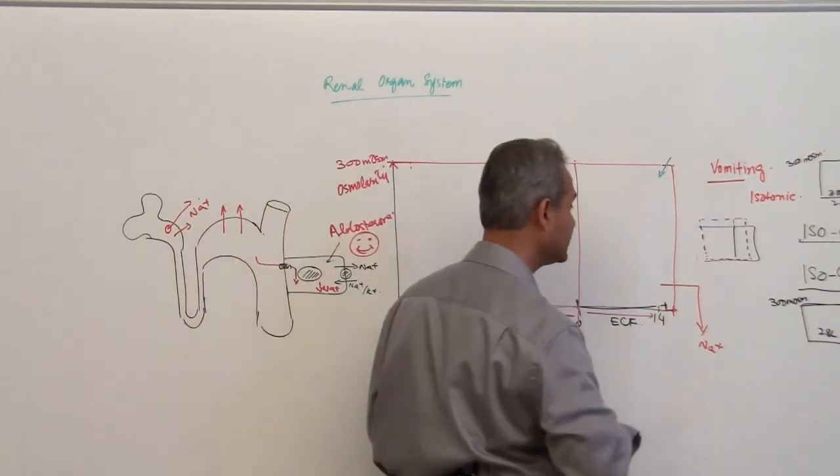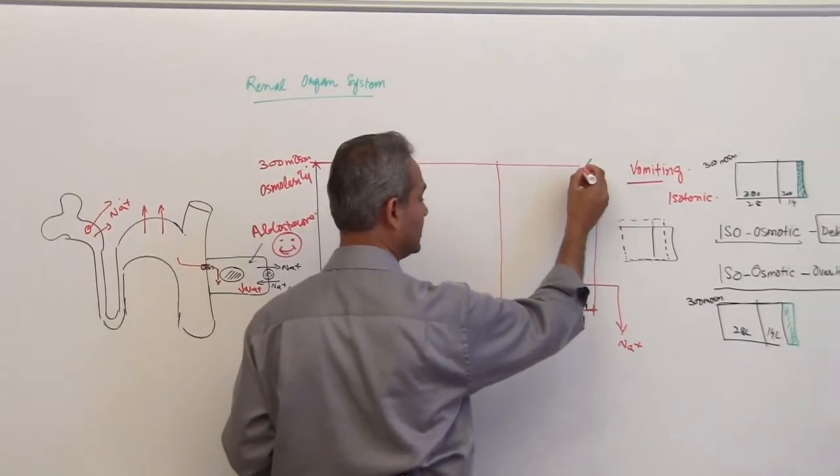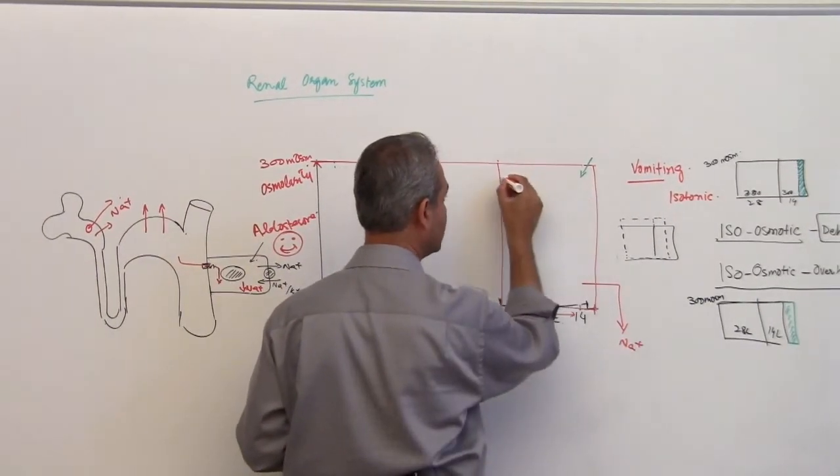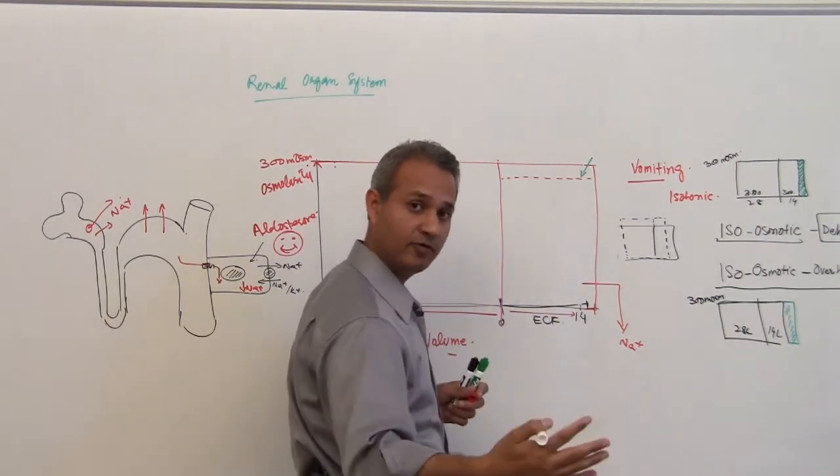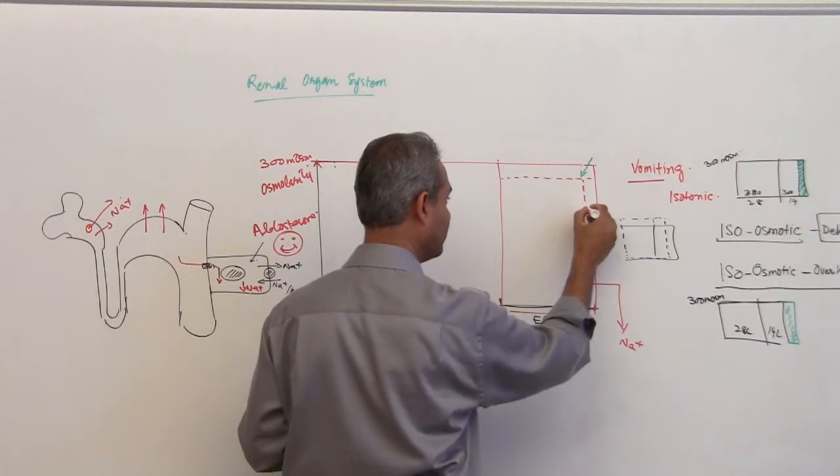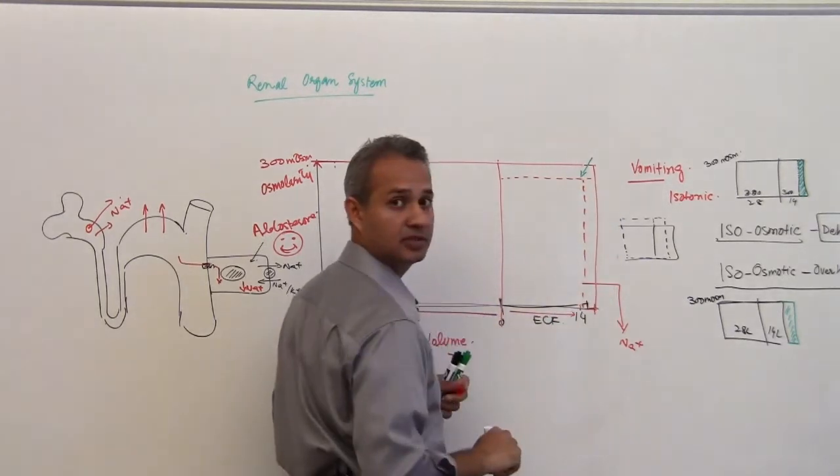So that is a situation where we have the sodium going out, so the osmolarity will reduce. Some extra fluid is going out as well, so the fluid volume will reduce. This is hypo-osmolar dehydration.